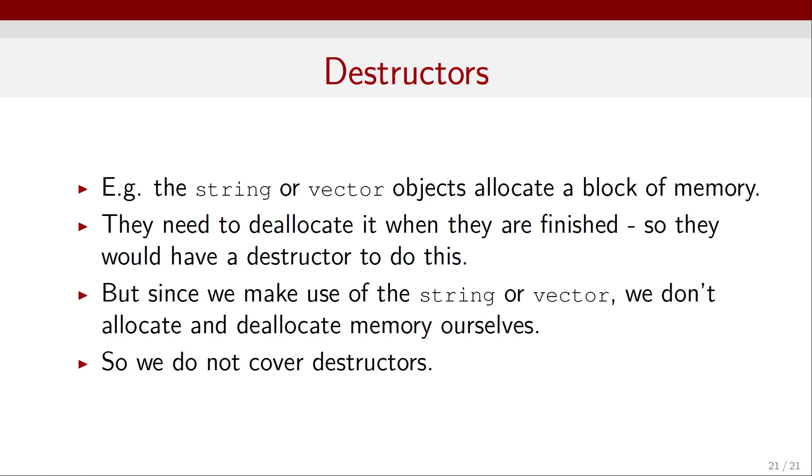As an example, we can think of the string or vector objects which allocate a block of memory. Now, these objects need to deallocate the memory when they're finished. So they have a destructor to do this. But since we make use of the string or vector, we don't have to allocate and deallocate that memory ourselves. It's handled automatically by these objects, string and vector, that are already defined in C++. So we will not need to cover destructors in this module. That's it for this video. Thank you for watching.